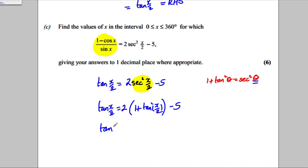Expand this out. Tan X over 2 would be equal to 2 plus 2 tan squared X over 2. Take away 5. And making the left-hand side 0, I would have 0 is equal to 2 tan squared X over 2. 2 subtract 5 is negative 3. And I would have subtract tan X over 2.